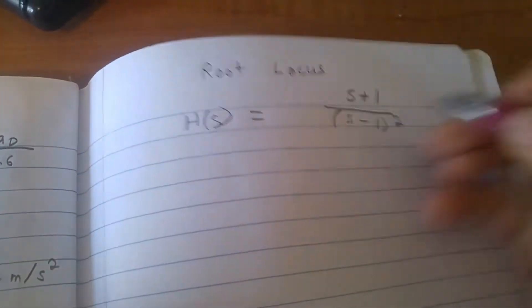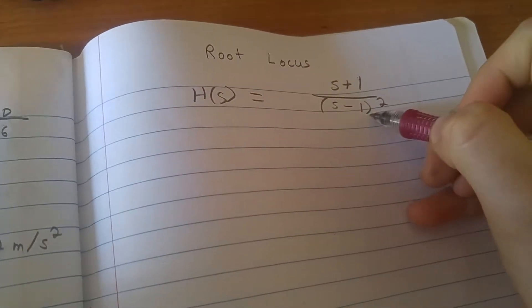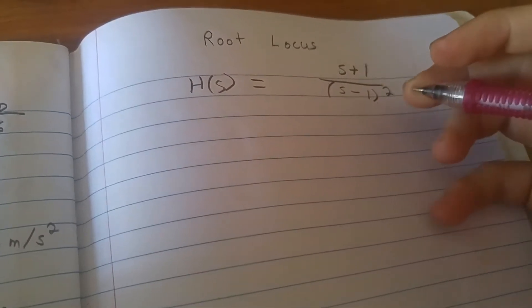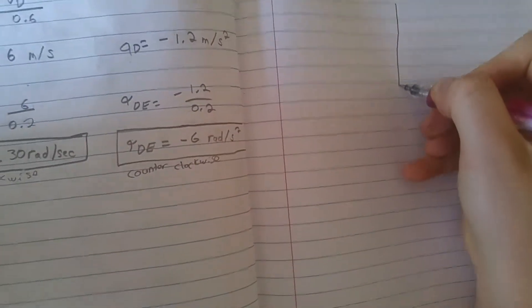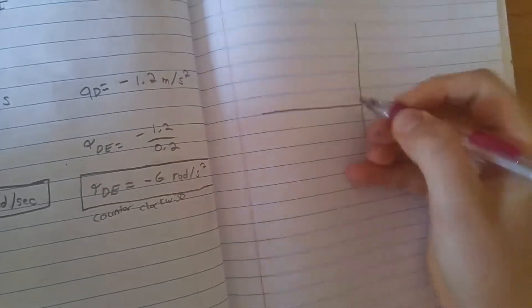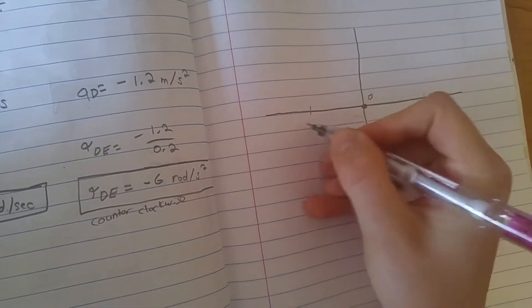When I look at this function, I know that I have one zero and two poles, in terms of real zeros and real poles. So what does that mean? If I create a graph here, I've got my graph going on. This is zero, one, and negative one.